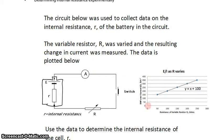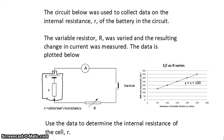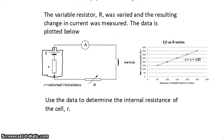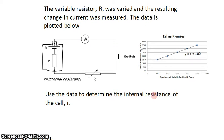On this axis, we don't have the current plotted, though. We have the EMF divided by the current plotted, and that was done to linearize the trend. The reason we linearized the trend was because we can now use the linear trend to determine the internal resistance of the cell, little r.